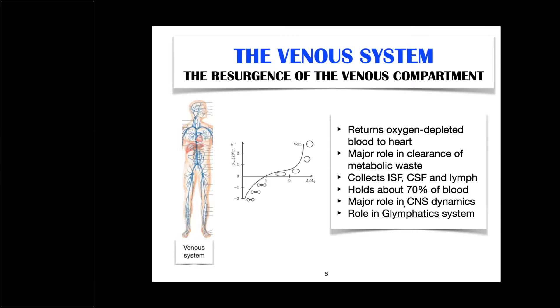It collects three main types of fluids, interstitial fluid, CSF and lymph. So, the venous system acts as a sink to major fluid systems. So, the performance of the venous system is going to be important to other fluid systems, of course. Not only that, it holds 70% of the blood in the body. So, by the sheer control of a large amount of volume of blood, it plays also an important role in the dynamics of fluids. And naturally, it plays a major role in the CNS dynamics, brain dynamics, fluid dynamics. Recently, there is a role assigned as well to the venous system in the so-called glymphatic system.